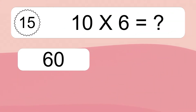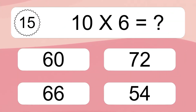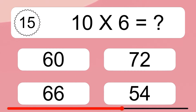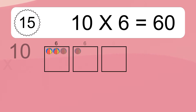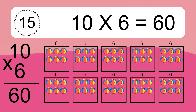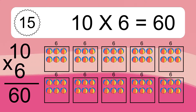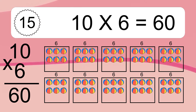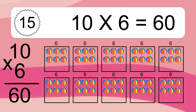10 times 6 equals what? 10 times 6 equals 60. We have 10 boxes, and each box has 6 colorful balls inside. If you count all the balls in all the boxes together, you will have 10 times 6 balls. This equals 60 balls.